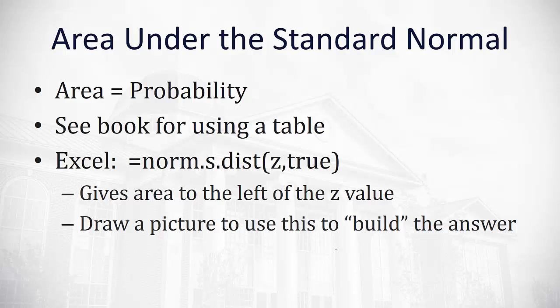Excel has a nice feature that is equals norm.s, for standard, dot dist, standard normal distribution. Then we'll put in the z-score and we'll type the word true afterwards. For our purposes it will always be true. This will give us the area to the left of the z value. And then we can draw a picture to build the answer depending on which piece we're looking for.